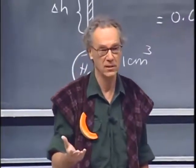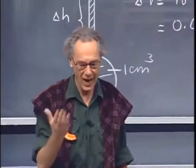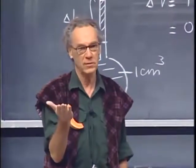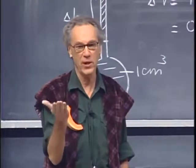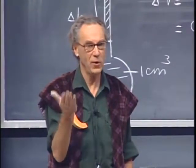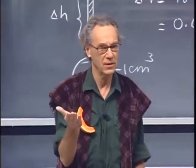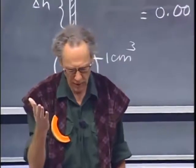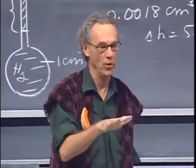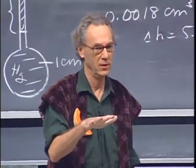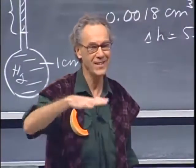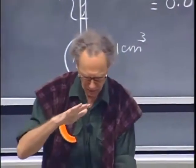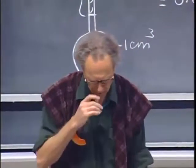This is why the Titanic sank, because ice floats on water — ice has a lower density. Without ice floating, no icebergs. This is also why you can skate on ponds, because ice has a lower density than water, so ice floats on water.